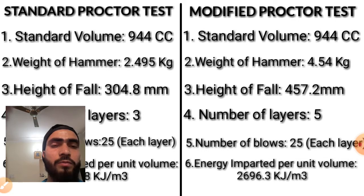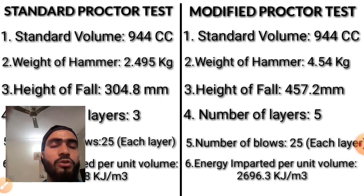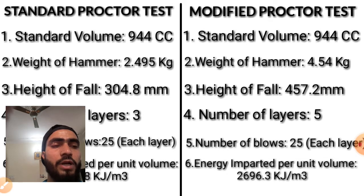The volume used in both the tests is the same — it is 944 cc, so that is not a point of difference. The first actual point of difference is the weight of hammer used. The weight of hammer in standard proctor test is 2.495 kg, and in modified proctor test it is 4.54 kg.